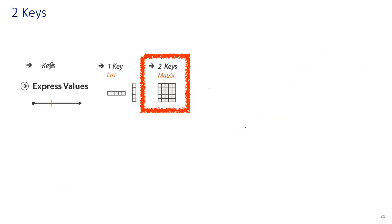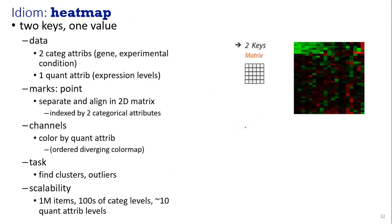For two keys, one key gives a list and two keys gives a matrix. For heat maps, two keys with one value — data uses two categorical attributes, for example genes and experimental conditions. One quantitative attribute such as expression levels. Marks are points separated and aligned in a 2D matrix indexed by two categorical attributes. Channels use color by quantitative attributes with diverging color maps. Task is to find clusters or outliers.